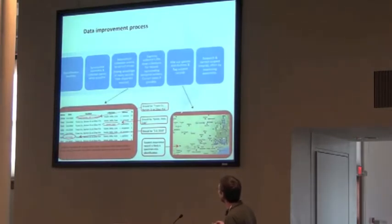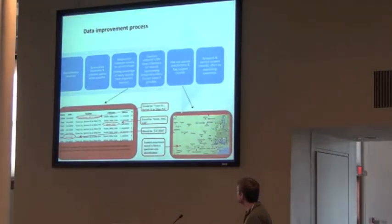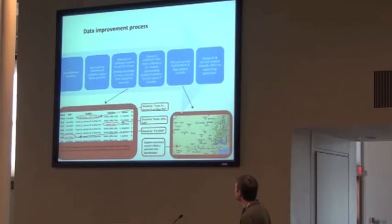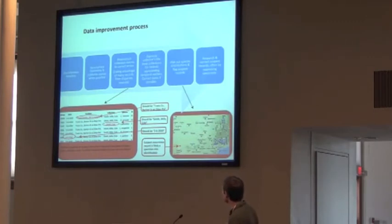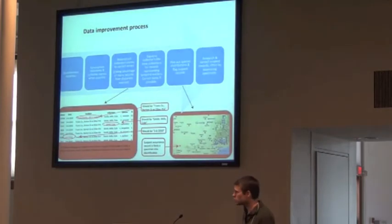Real quick about our data improvement process. After we deal with reference localities, we synonymize taxonomy and collector names, and then we can reconstruct collecting events to some extent, and try to look for obvious errors in date, location, or collector. And then we can plot out species by species and look for outliers, and we can research those records and look at the specimens, usually to sort out specimen identifications.